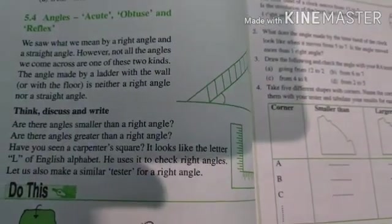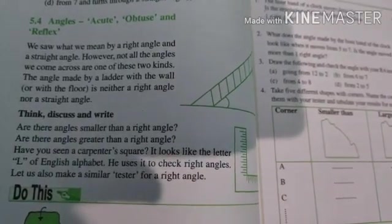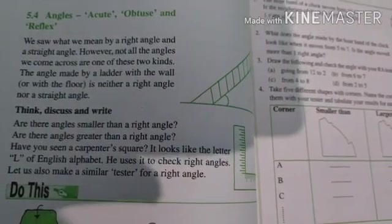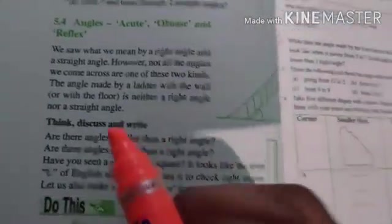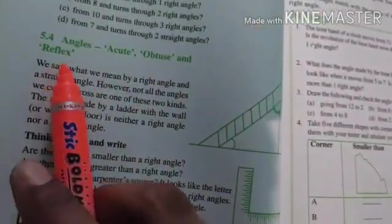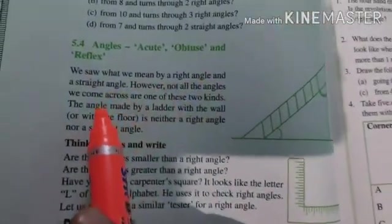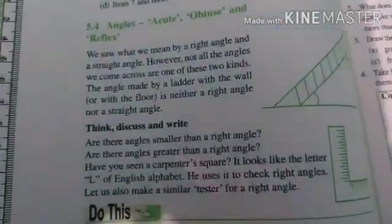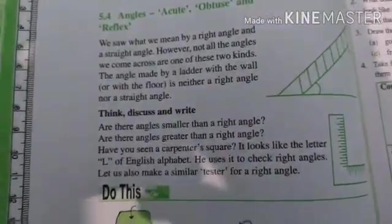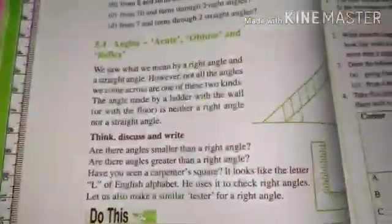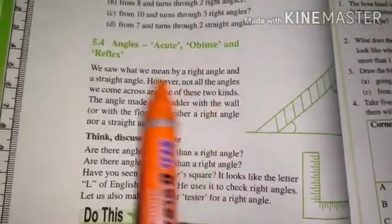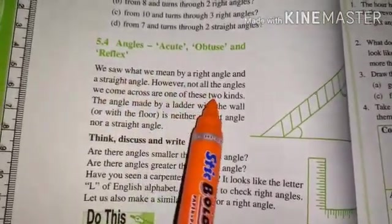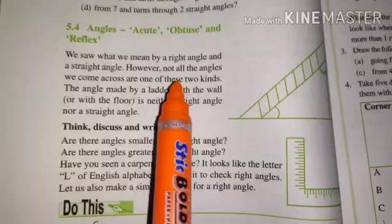Aaj hum bachon ko naye topic padhenge ja rahe hain angles mein: Acute Angle, Obtuse Angle and Reflex Angle. Sabse pehle baat karenge bachon acute angle ki. As you see study, yaha par likha hua hai, we saw what we mean by a right angle and straight angle. Hum ne pada hai na straight angle aur right angle mein.